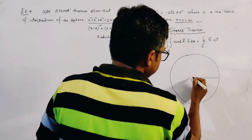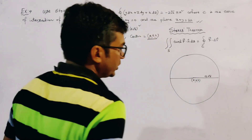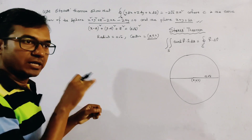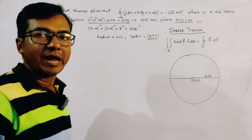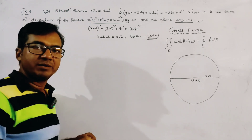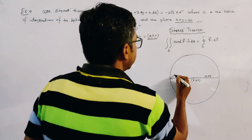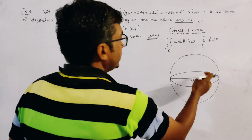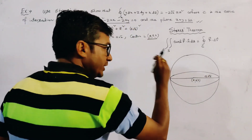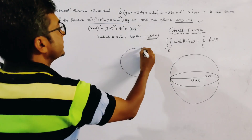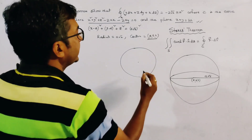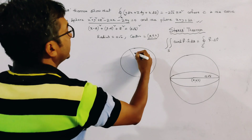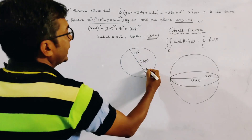The radius is a root 2. If we draw the sphere and the plane, the plane cuts the sphere in a circle. The center of the circle is (a, a, 0) and the radius is a root 2.